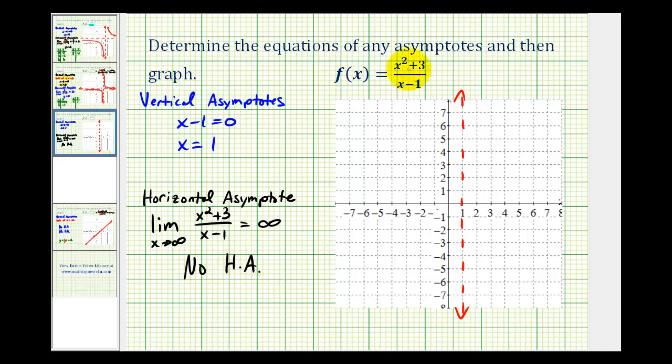However, since the degree of the numerator is one degree higher than the degree of the denominator, this function is going to have a slant or oblique asymptote. To determine the slant asymptote, we have to perform this division. Let's go ahead and do that on the next page.